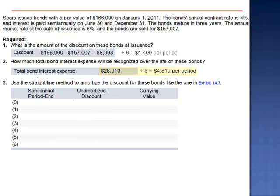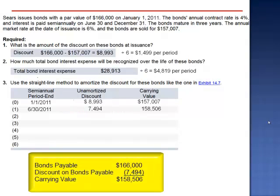Now let's prepare that amortization schedule. The amortization schedule shows the movement of the carrying value toward the face value. The carrying value of these bonds begins at $157,007, with an $8,993 discount. At the end of the first 6-month period, we amortize the discount by reducing it by $1,499. $8,993 minus $1,499 drops the discount to $7,494. As the discount gets smaller, the carrying value gets bigger — we add $1,499 to the carrying value. $166,000 minus a $7,494 discount is a carrying value of $158,506.